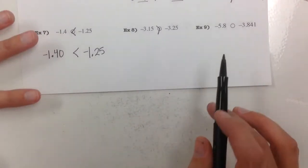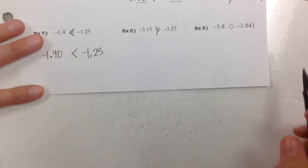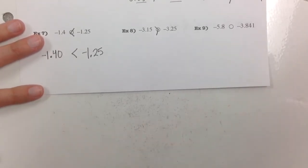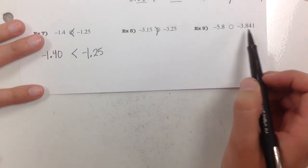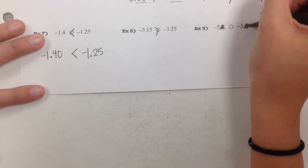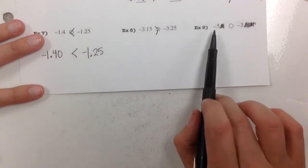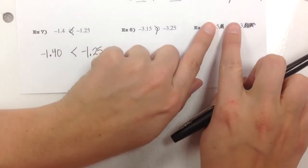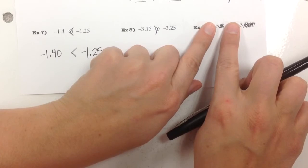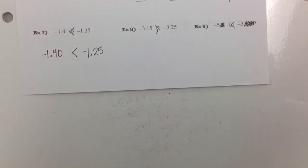The last decimal example: negative 5 and 8 thousandths compared to negative 3 and 841 thousandths. Are they both negative? Yes. Now I look at the whole number part: here I have negative 5, here I have negative 3. I can ignore the decimal places and just compare the whole number parts. Normally 5 would be greater than 3, but with negatives it works the opposite way — it's actually less than, further into the negatives.